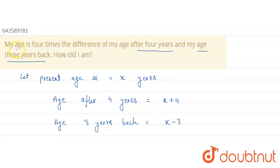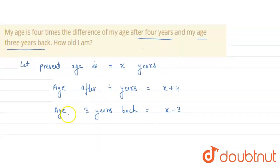Now it is saying that my age, my present age, is four times the difference of what? Difference of age after four years and three years back. So my present age, according to the statement...